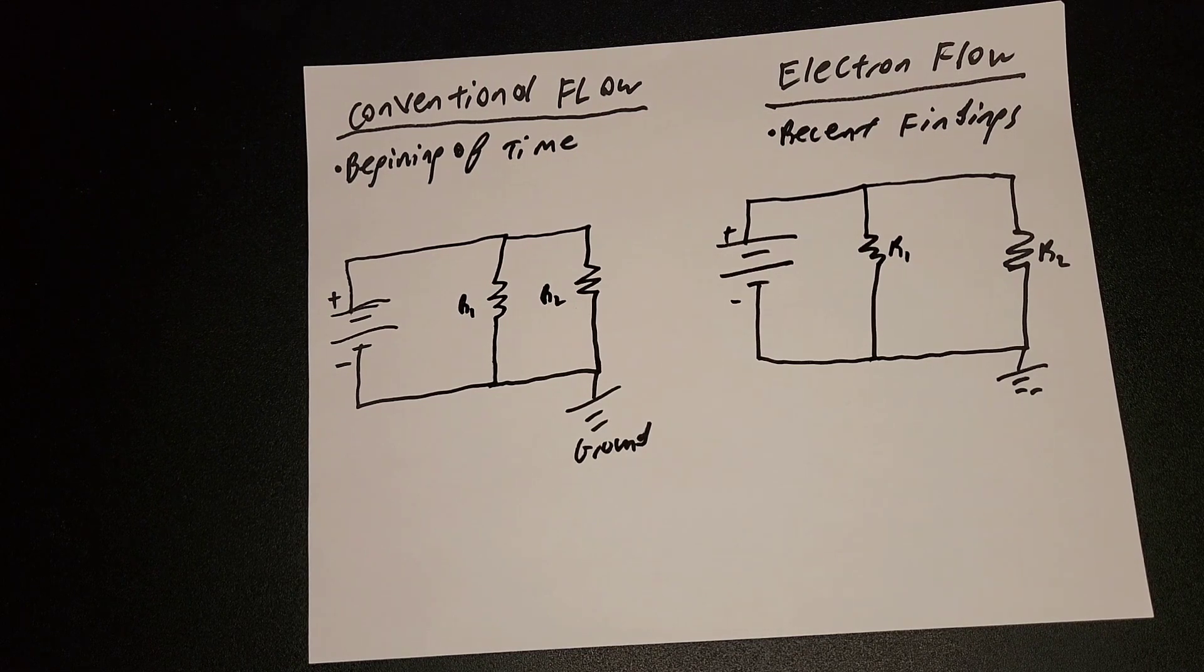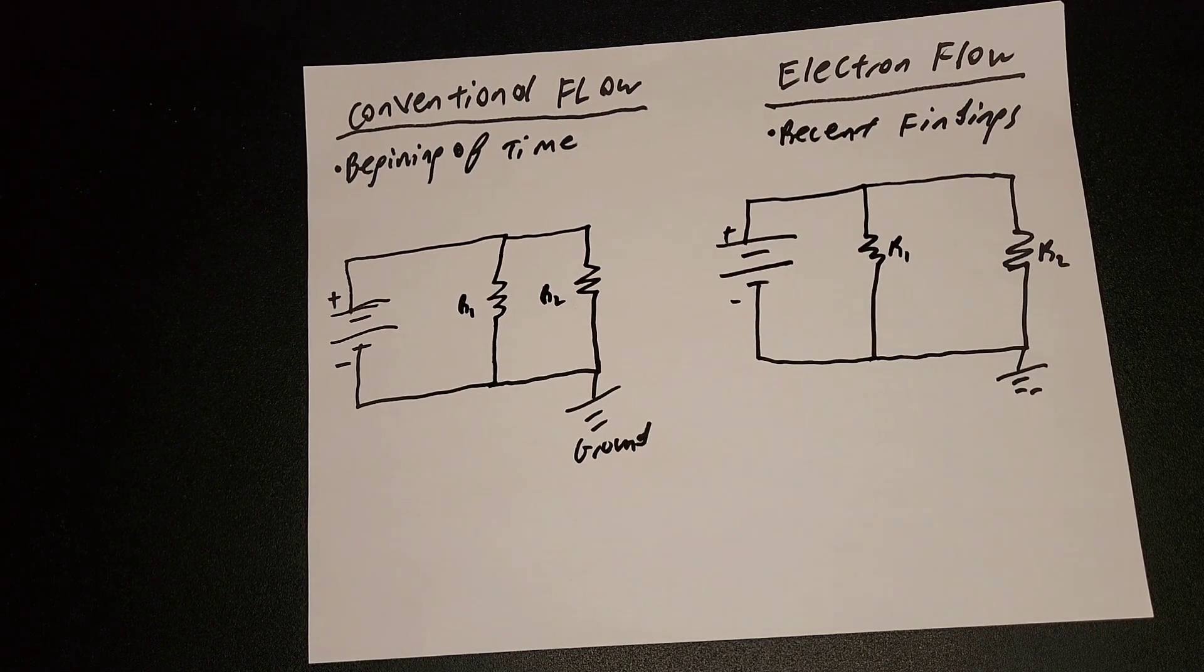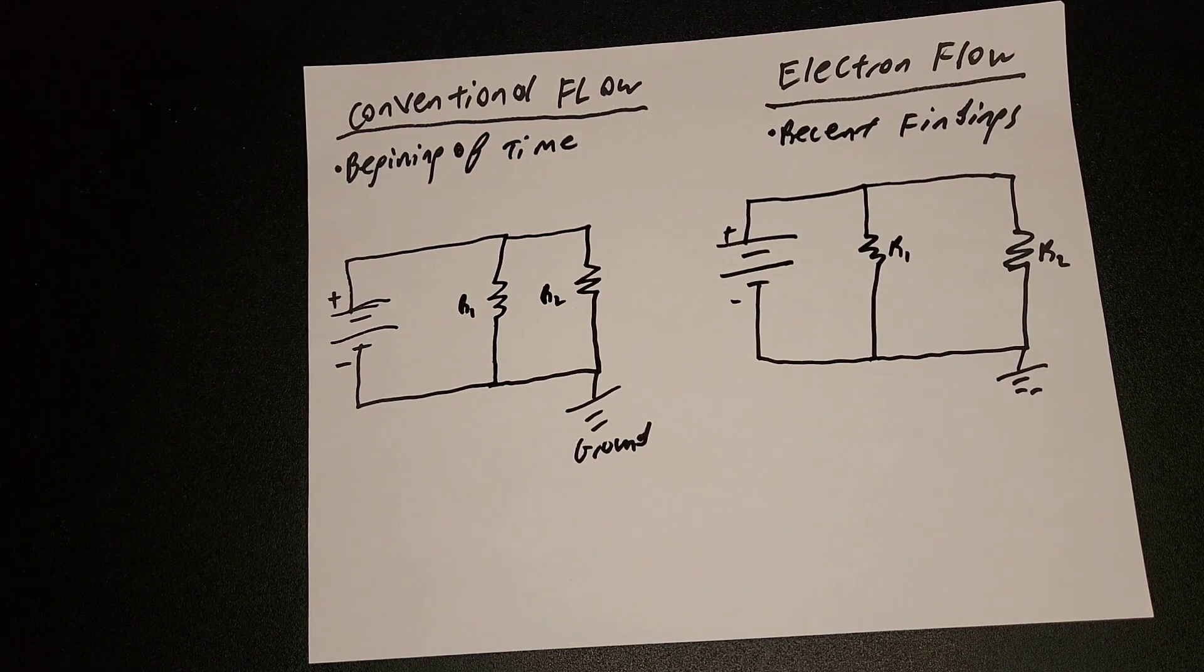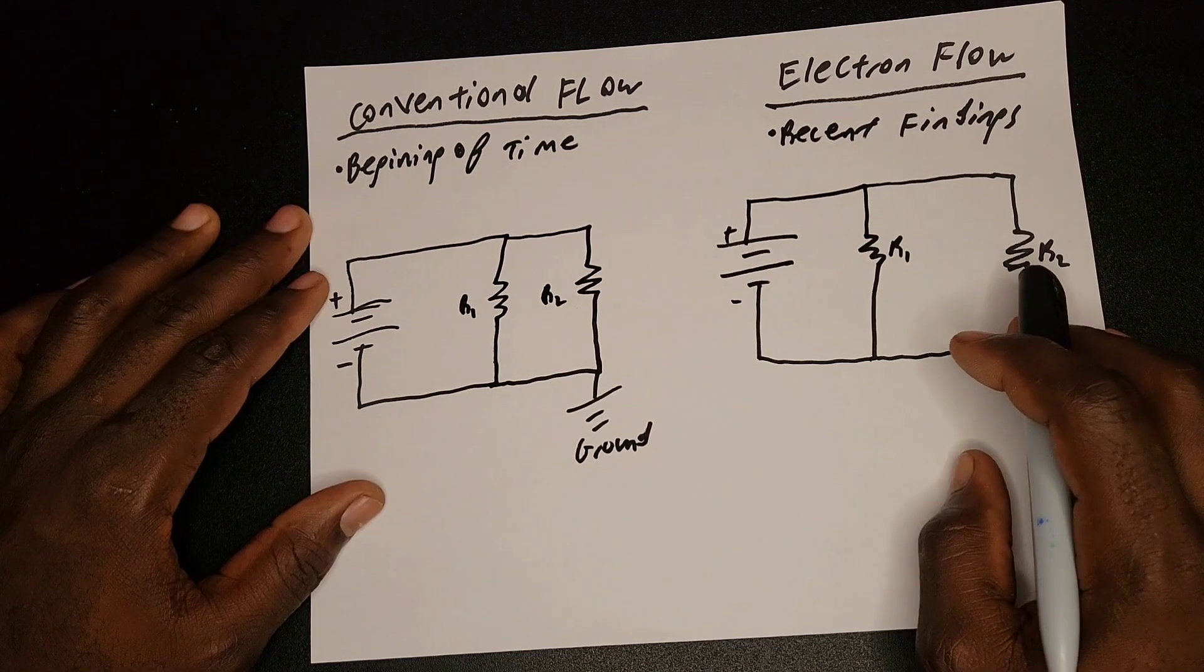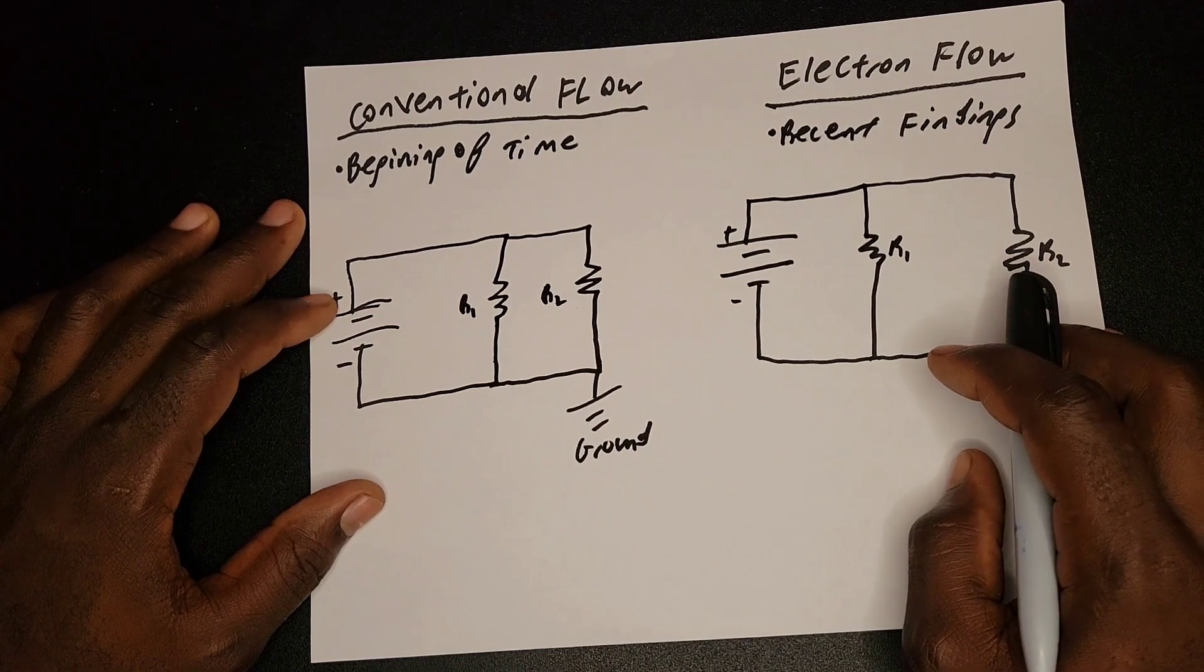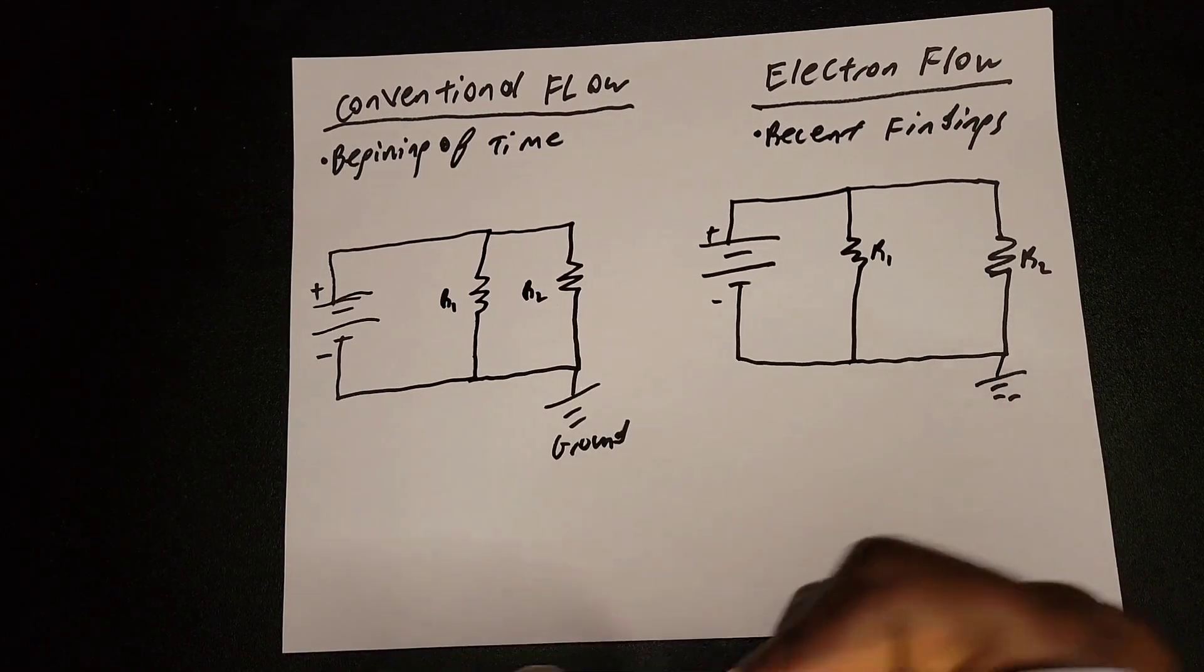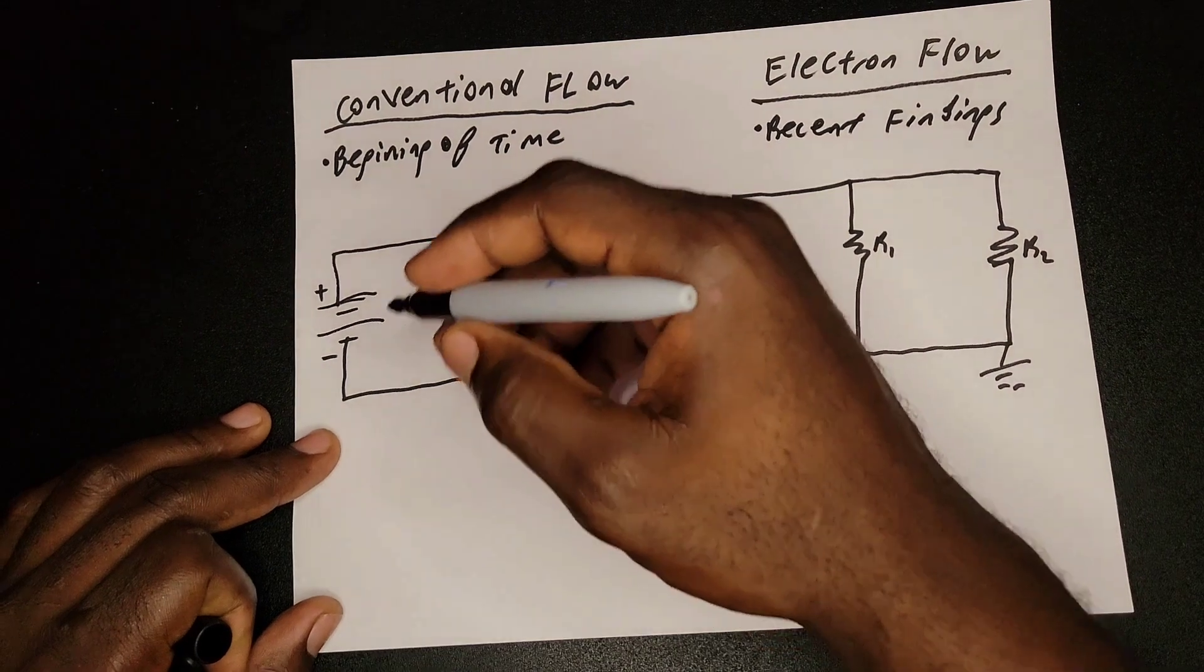Now, conventional flow. So when we first discovered electricity, or current, or whatever you want to call it, when you first have the discovery, it was said that current flows from positive.